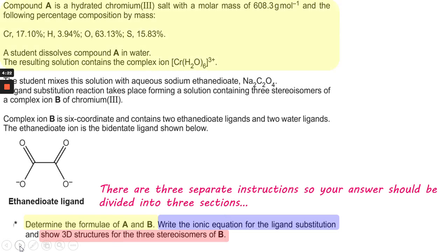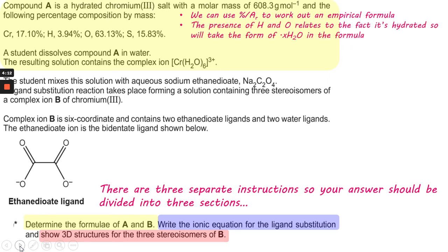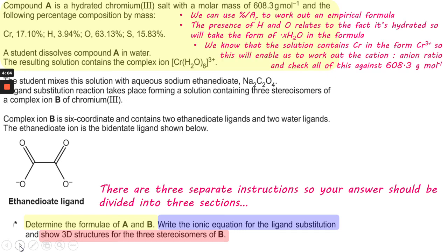Let's look at the top part first. It gives you percentages by mass, which allows us to work out an empirical formula by dividing each percentage by the relative atomic mass of each element. The presence of hydrogen and oxygen relates to the fact it's hydrated, so it will take the form X·H₂O in the formula. We know the solution contains chromium in the form Cr³⁺.